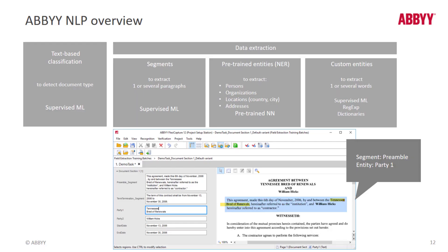We have used NLP for text-based classification since FlexiCapture 12 Release 2. This kicks in as soon as you use text-based classifiers as well as combined classifiers, through the use of supervised machine learning — meaning we apply training to create such classifiers. Those trained neural networks improve over time; when we correct misclassified documents, those documents are added to the training set and the training batch improves overall recognition. A basic rule of thumb: the more documents you have in the classification training batch, the better the results.